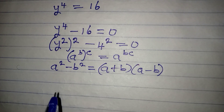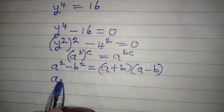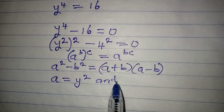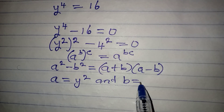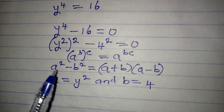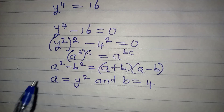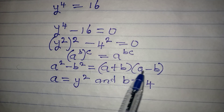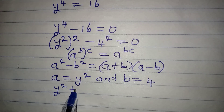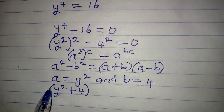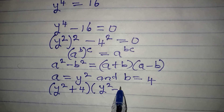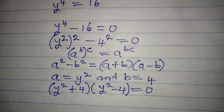From here, what is our a? Our a is equal to y squared, and then our b is equal to 4. Putting this into the standard form, a plus b becomes y squared plus 4, and in the second bracket we have y squared minus 4. Both of these multiplied together will be equal to 0.